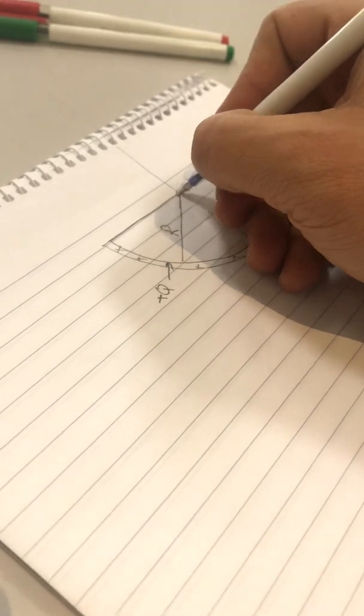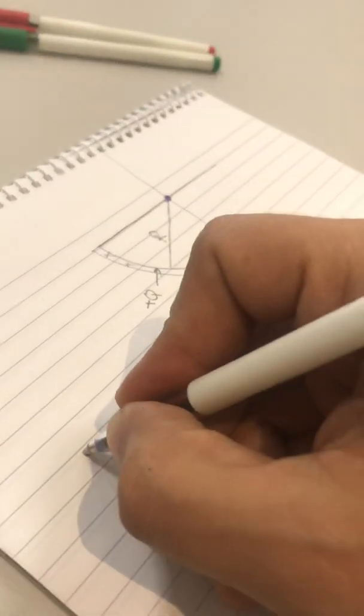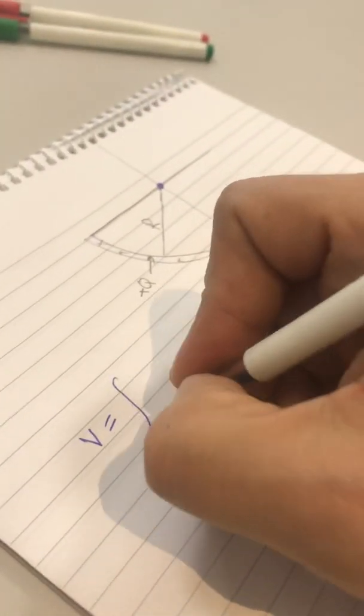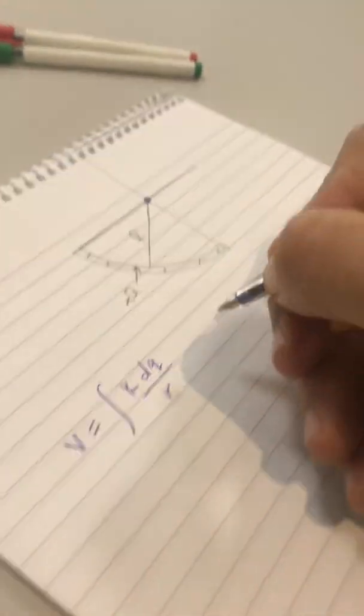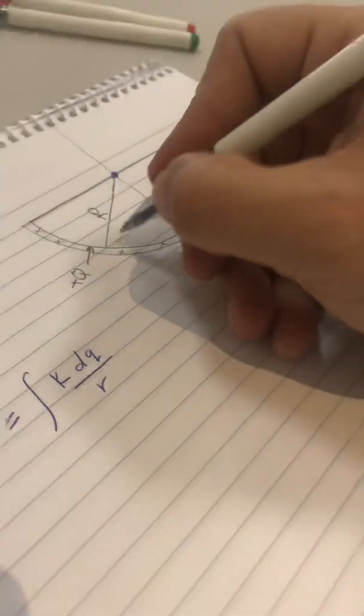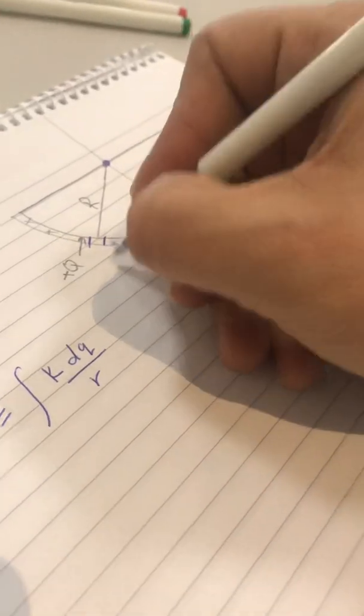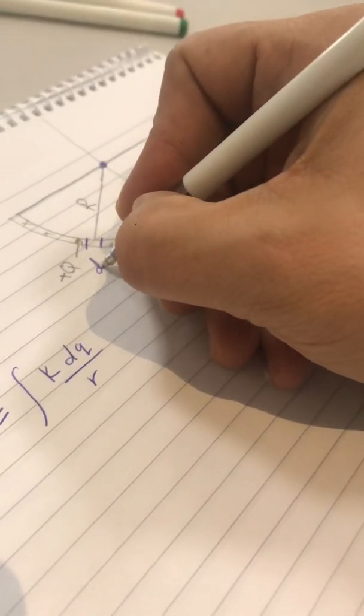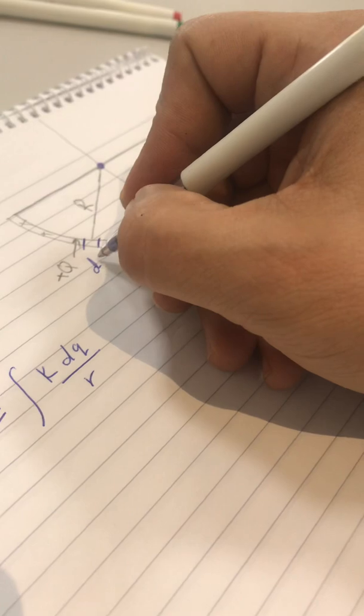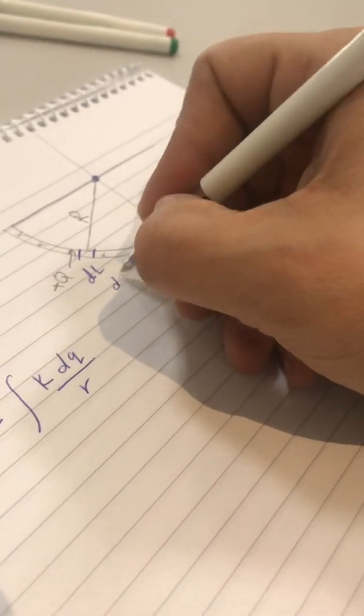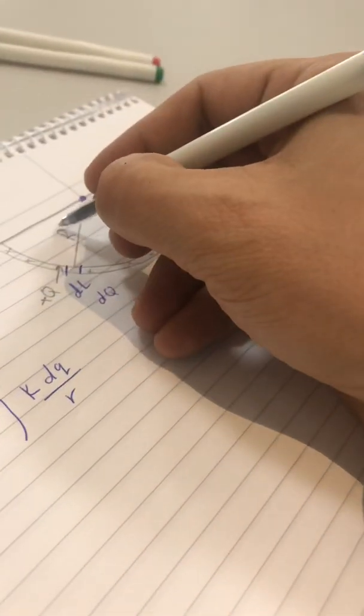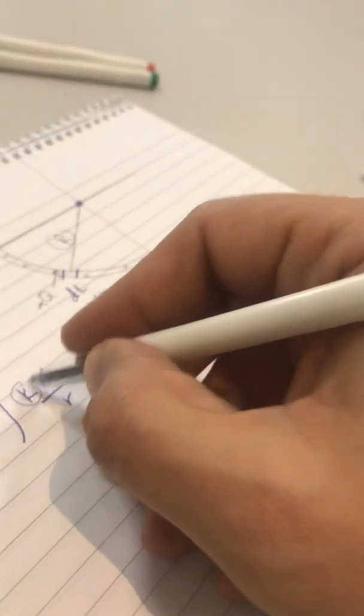We want to find the electric potential at this point. As you know, the formula of electric potential is the integration of KdQ over R. Now, let's take a small part, let's say that this is DL. This DL carries a charge DQ. Now, the R here, as you see, the R is constant, the K is constant.